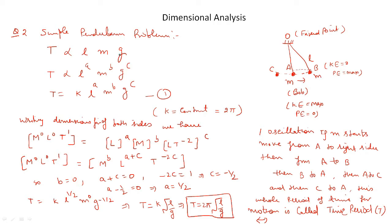Let length be involved A times, mass B times, and acceleration due to gravity C times in the time period formula. We write this relation as T = K · L^A · M^B · G^C — call this equation 1. K is a constant and from experiments its value is found to be 2π. Now we will write the dimensional formula for both sides of equation 1.